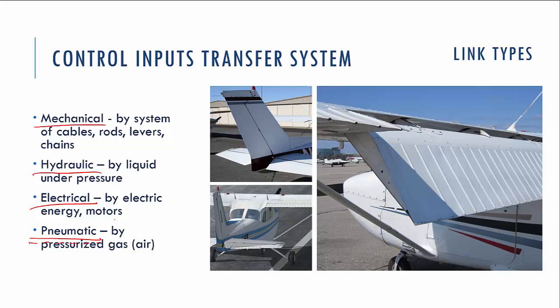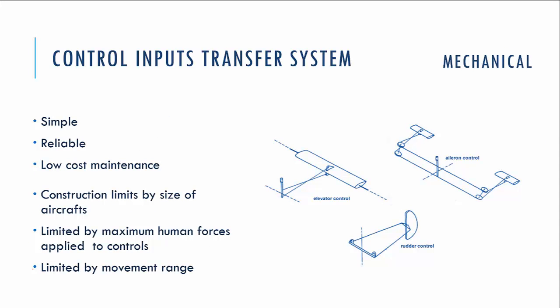The pneumatic system is just additional — for main controls we don't use it. The reason is that pressurized gas is compressible, so we cannot position the control surfaces precisely. For example, an aileron will always change its position depending on the aerodynamic forces on it. So let's go with the mechanical way of connecting inputs and outputs.